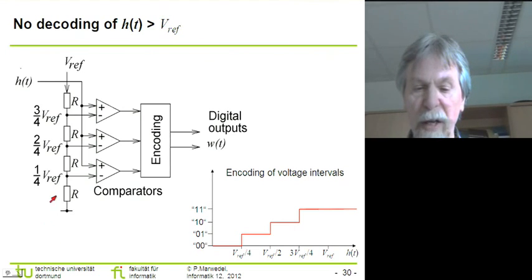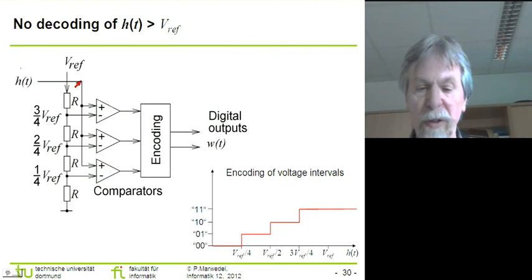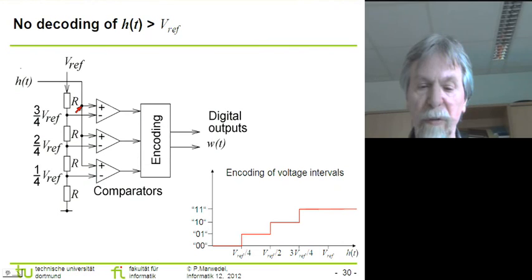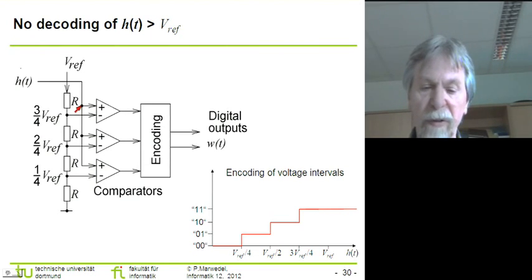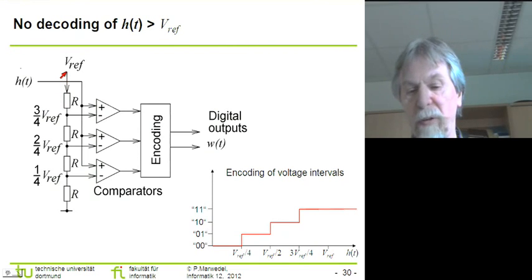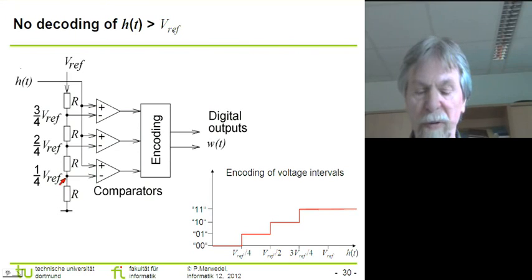This converter is fast because of the following approach. We assume there is an input signal which we call H of T. The input signal H of T is compared to the margins for different voltage intervals. These boundaries for the voltage intervals are generated by using resistors, along with a reference voltage, and we divide this reference voltage into equal intervals using equal resistors.